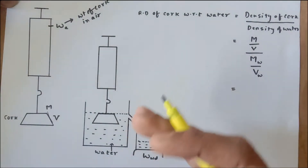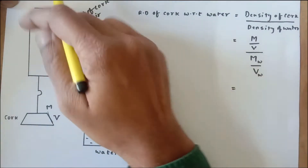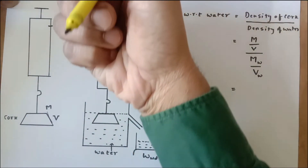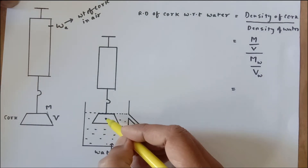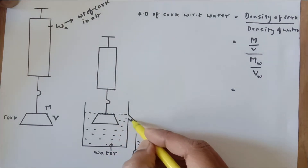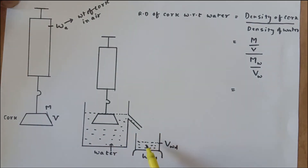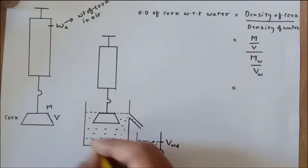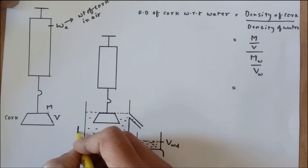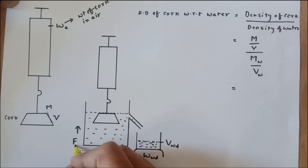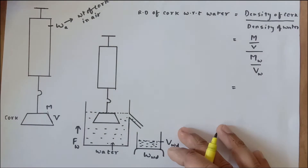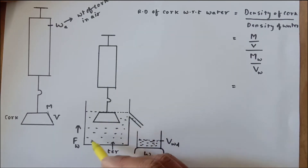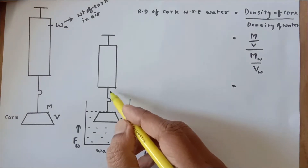Ideally, you should immerse this piece of wood inside the water completely. When you lower the spring balance, this piece of wood should be completely submerged inside the water, and then some amount of water from the Eureka can should come out. We should collect that water, measure its volume and weight — the weight of water displaced should equal the upthrust. However, this will not happen because the wood is lighter than water; its density is less than water's density, so it will not submerge.